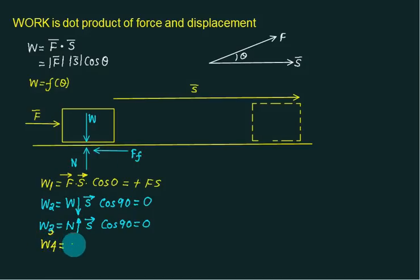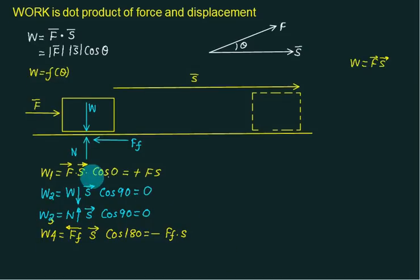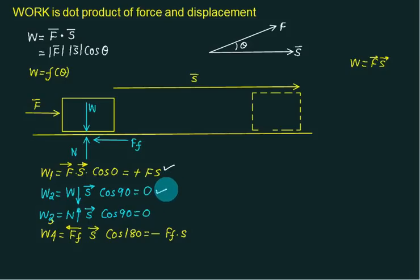For the friction force W3: friction acts in the leftward direction and s acts rightward. The angle between these two vectors is 180°. So the work done by friction equals minus F times s. This shows not all forces contribute to work — forces which contribute to work are called active forces, and forces which do not contribute are called passive forces.